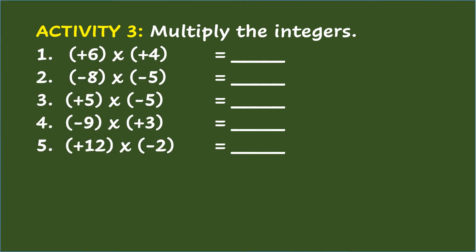Activity 3: Multiply the integers. Number 1: Positive 6 times positive 4 equals blank. The answer is positive 24. Number 2: Negative 8 times negative 5 equals blank. The answer is positive 40. Number 3: Positive 5 times negative 5 equals blank. The answer is negative 25. Number 4: Negative 9 times positive 3 equals blank. The answer is negative 27. Number 5: Positive 12 times negative 2 equals blank. The answer is negative 24.